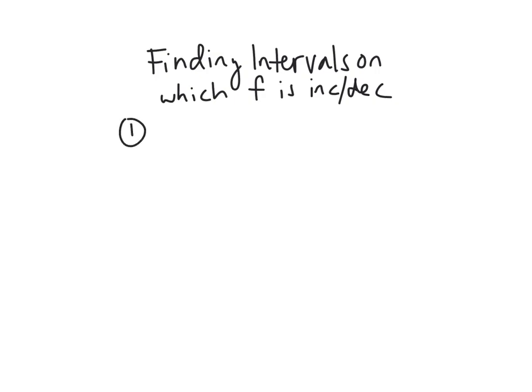First, we're going to look at how we can tell whether f is increasing or decreasing on an interval. So it's a few-step process. So the first thing you want to do is find your critical values. So that's where f prime is either zero or does not exist.